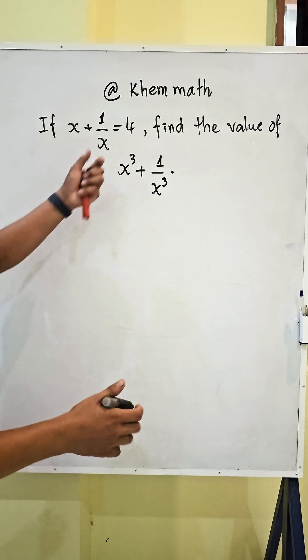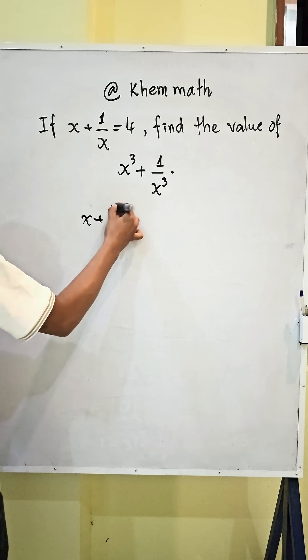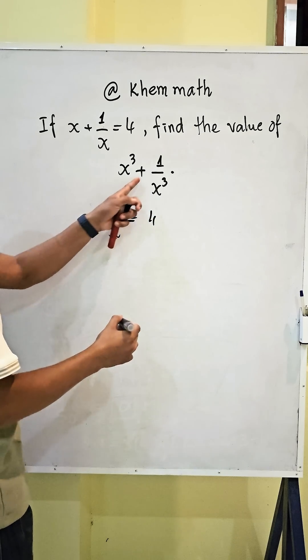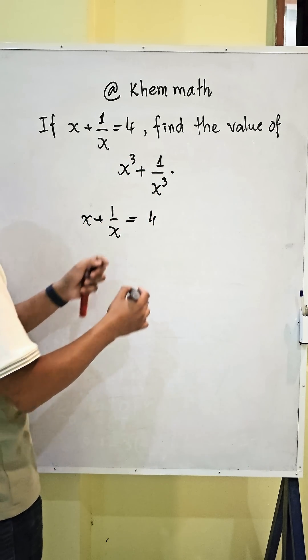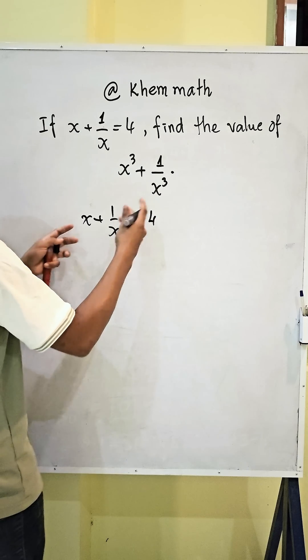Before we use this equation, we have x plus 1 divided by x equals 4. Our expression is power 3, so I write this equation to power 3.